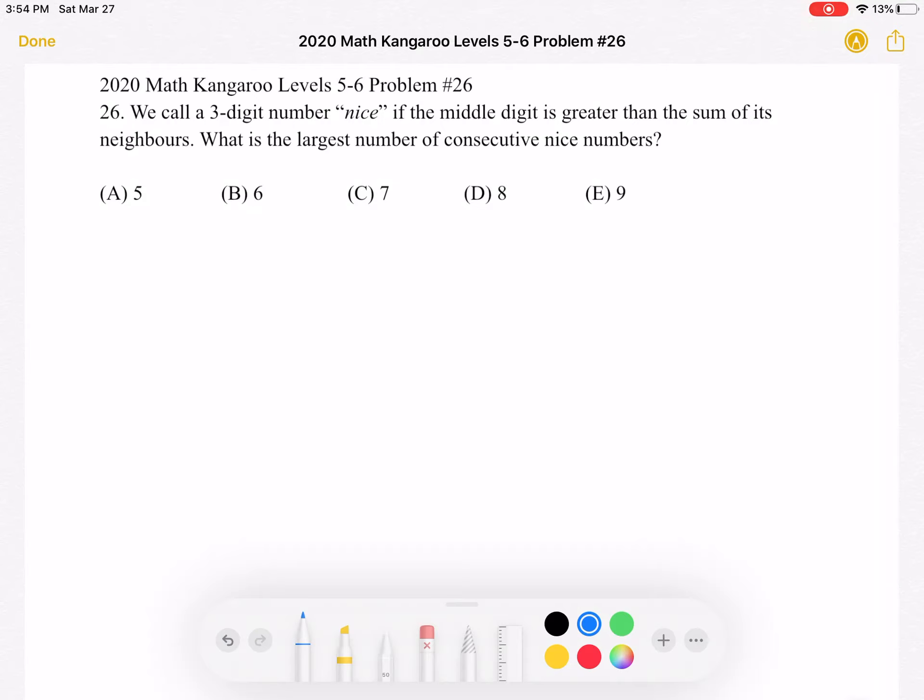Let's get started. We know that we have a three-digit number. And let's try to think about what numbers could go in the ones digit if we want to have this property that the middle digit is greater than the sum of its neighbors.